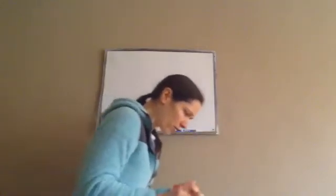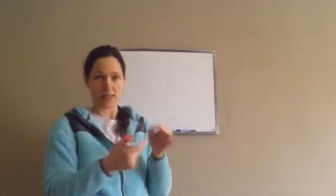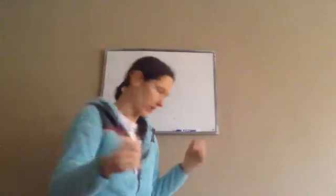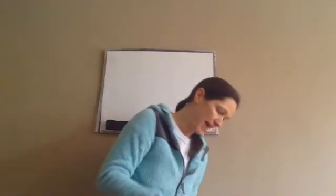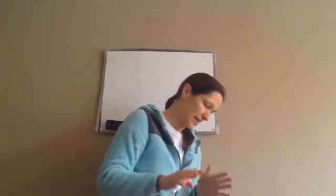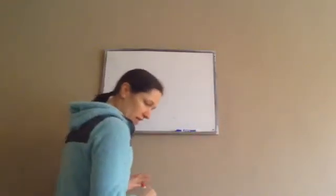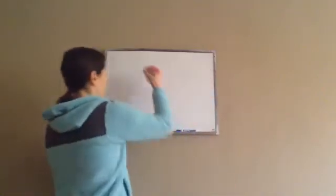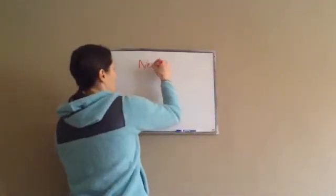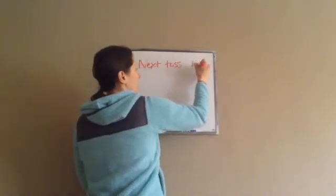A fair coin — meaning it has a heads and a tail — is tossed three times and comes up heads every time. The question is: what is the probability that on the next toss it will come up heads?